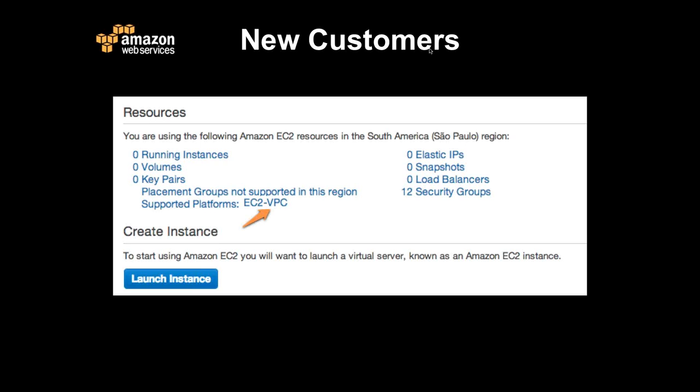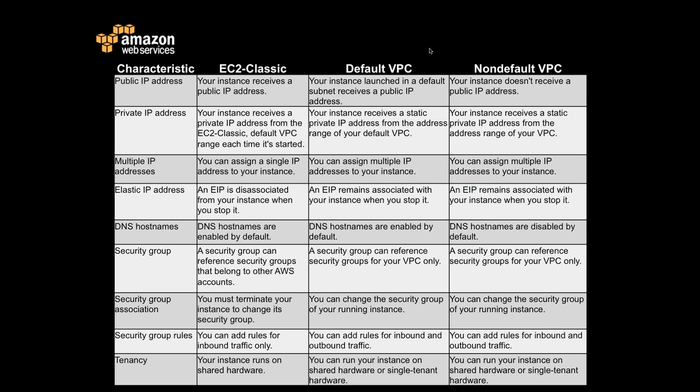With default VPC, you're still going to get a public IP address — you'll get both a public one and a private one. If you create your own VPC, that's up to you — you have full control. With EC2 Classic, you can only do one IP address. With default VPC, you can now do multiple IP addresses against your instance. Another big change: elastic IP addresses used to get disassociated when you stopped your instance — but now they're sticky within default VPC. Default VPC simply means we set up a whole bunch of different services for you in advance, but you still have full control over those services. There's a decent amount of difference between EC2 Classic and default VPC, and I think you'll see these as benefits you didn't have before.